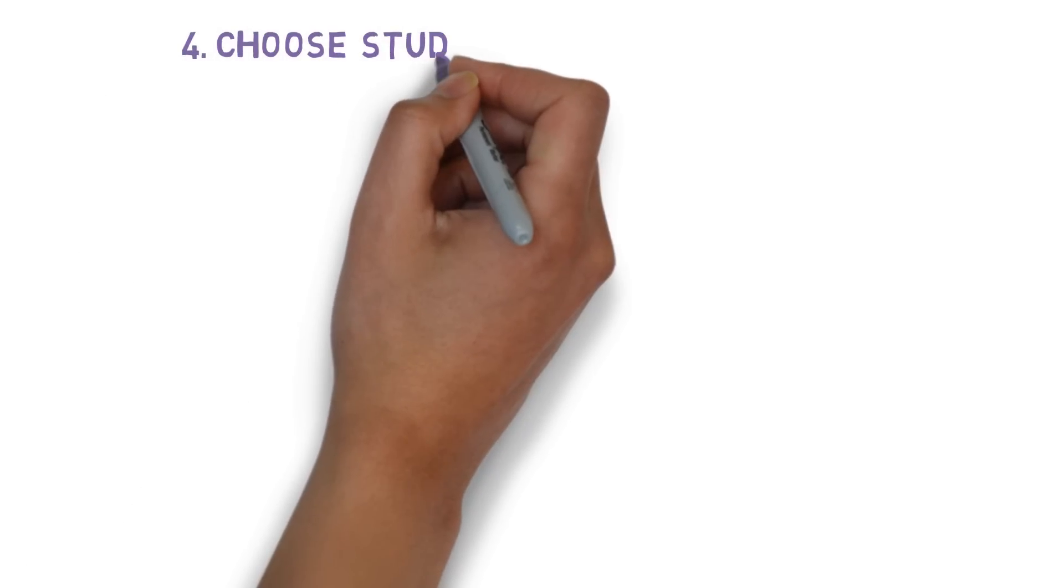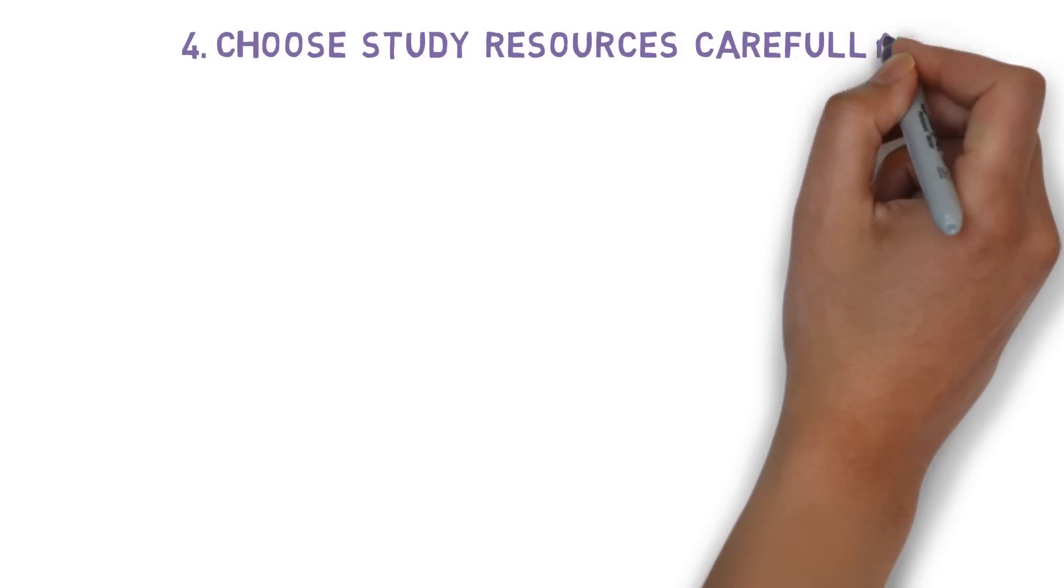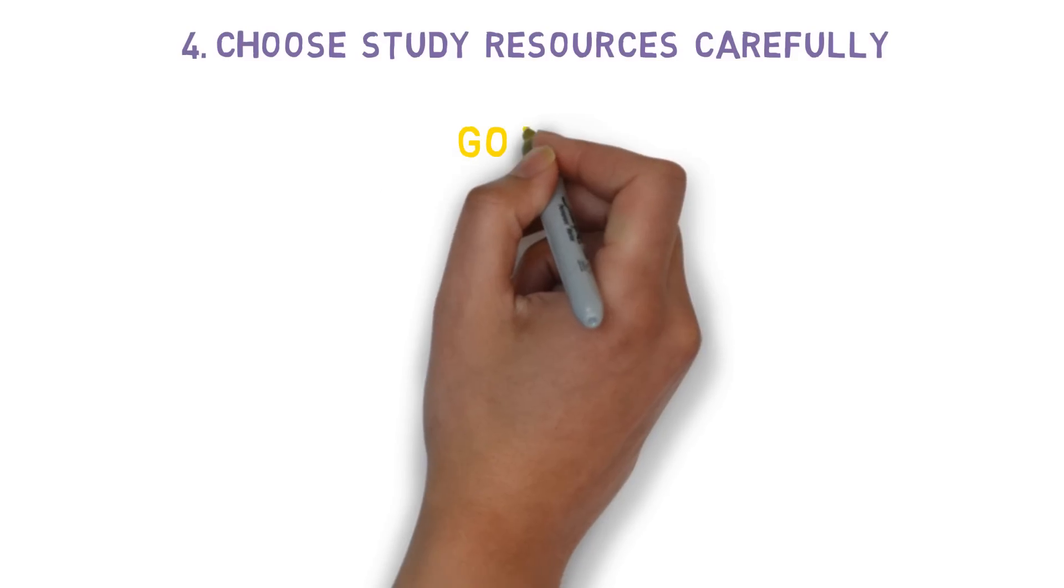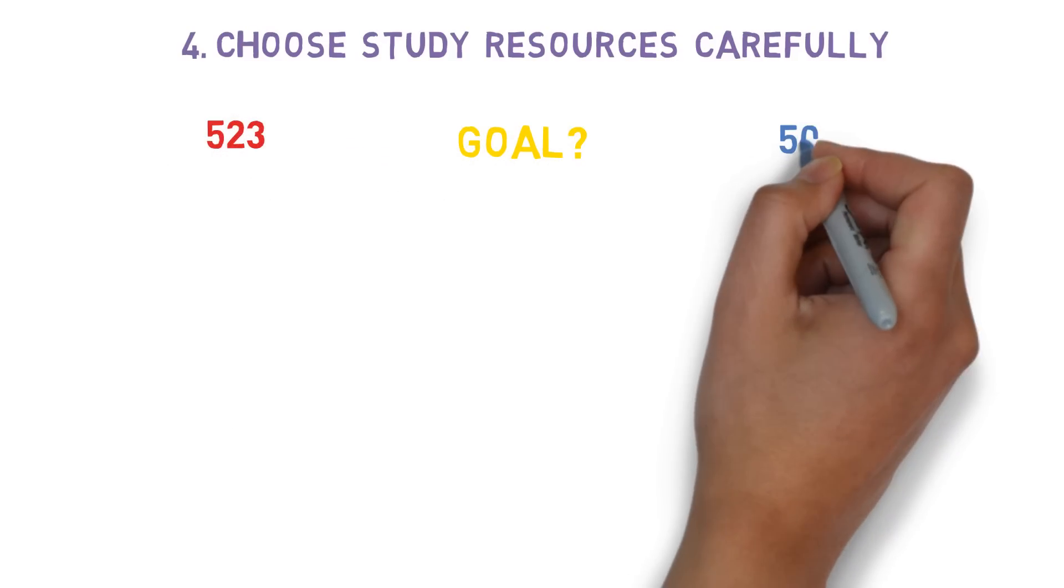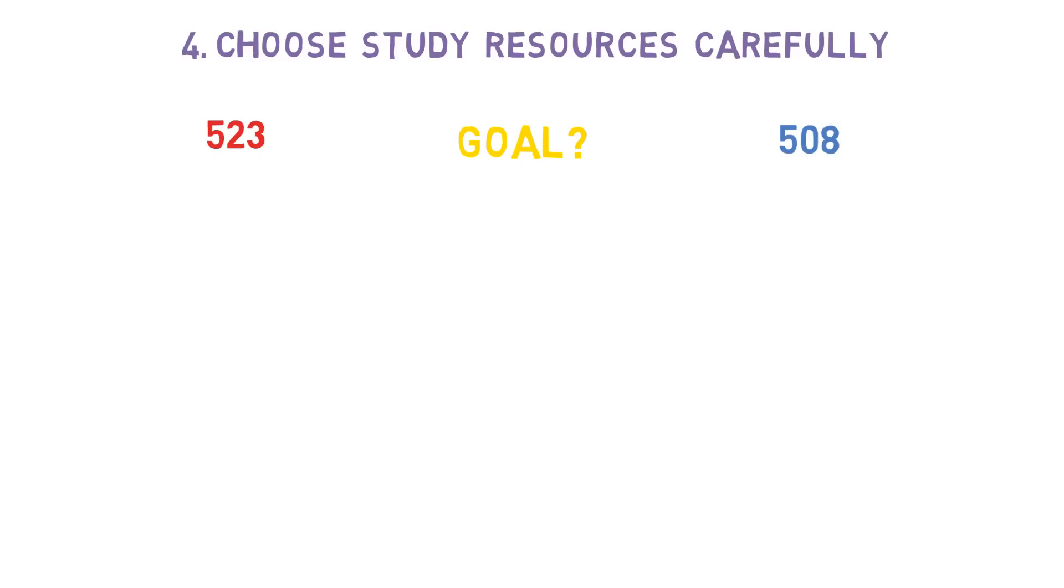Choose your study resources carefully. First you need to ask yourself, what is the goal in studying for the MCAT? Are you going for the 99th percentile or are you okay with the 80th percentile? Be honest with yourself. If you are shooting for a top score, you need to understand that you'll be putting in much more time and effort. Prepare yourself for this, but it will pay off.